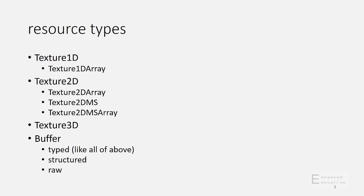This is a summary of the various resource types that can be created in the DX12 API: Texture 1D, 2D, 3D, various forms of buffer, and there's also arrays, and MS stands for multi-sample buffers. There's nothing different here from DX11. There is a lot of new flexibility in the way the underlying memory for these resources can be allocated in the DX12 API, with concepts like heaps, reserved resources, placed resources, committed resources. Those topics are out of scope here.